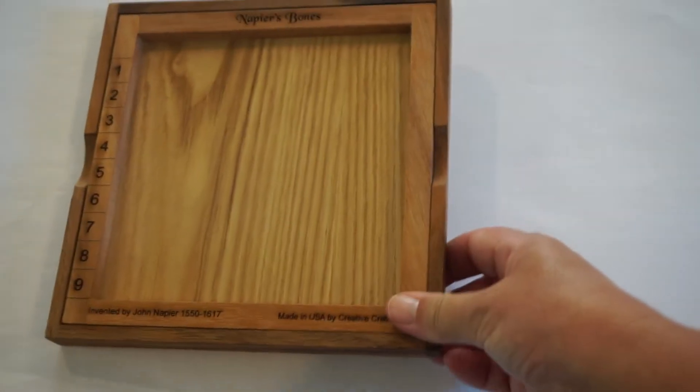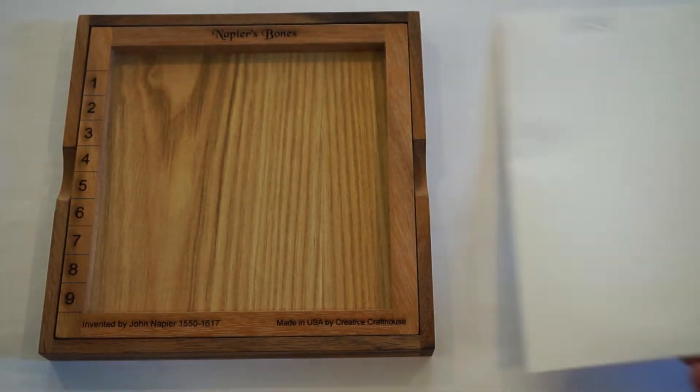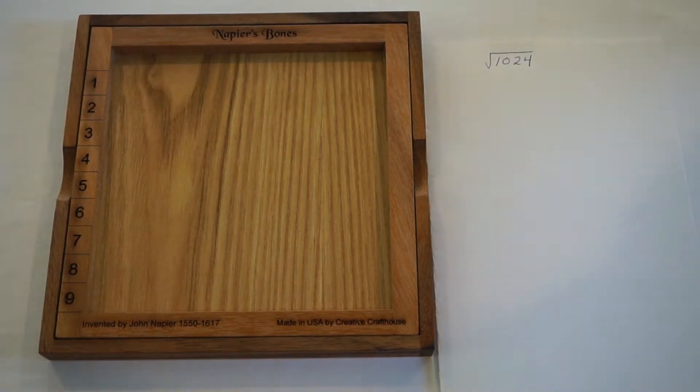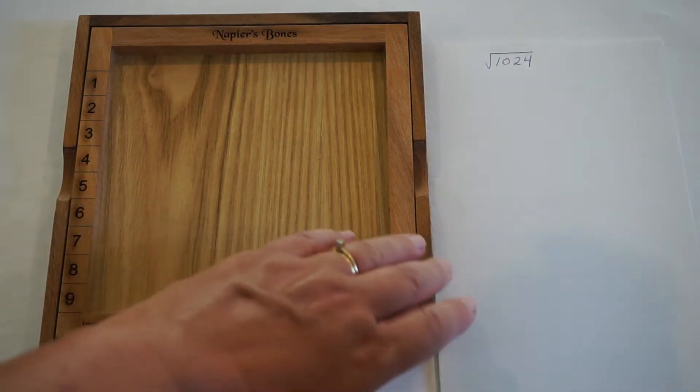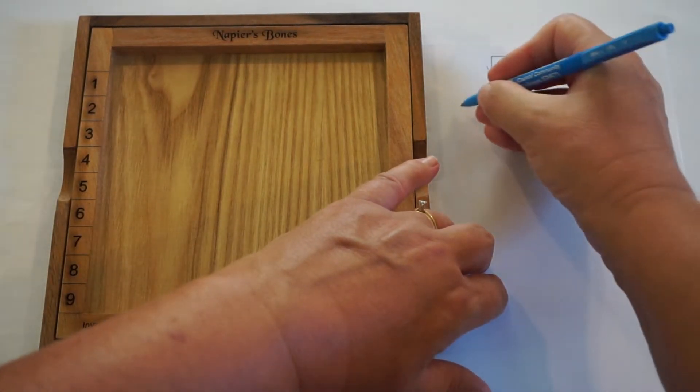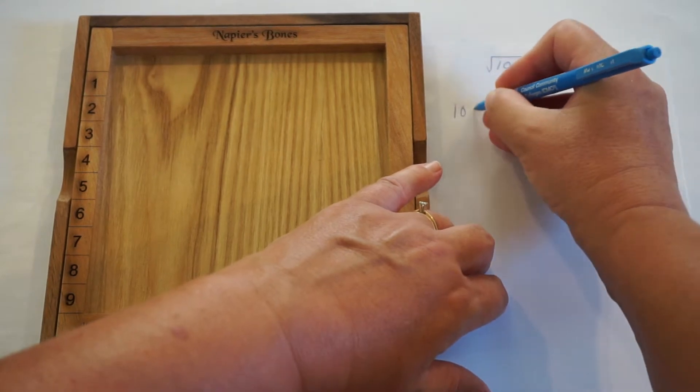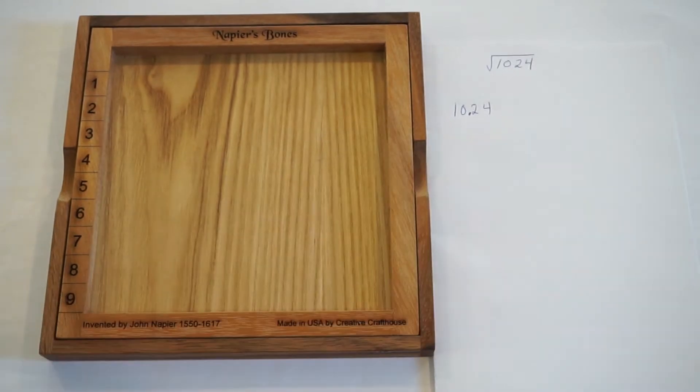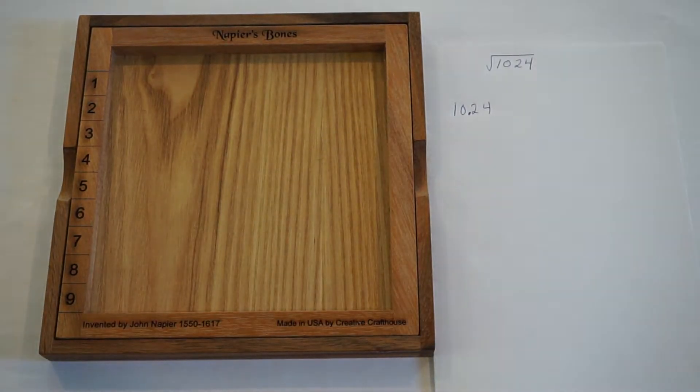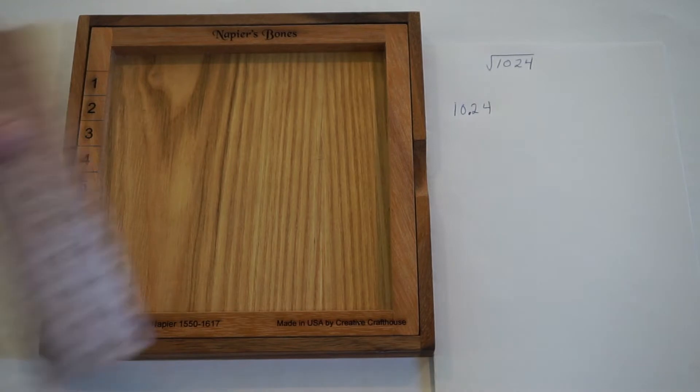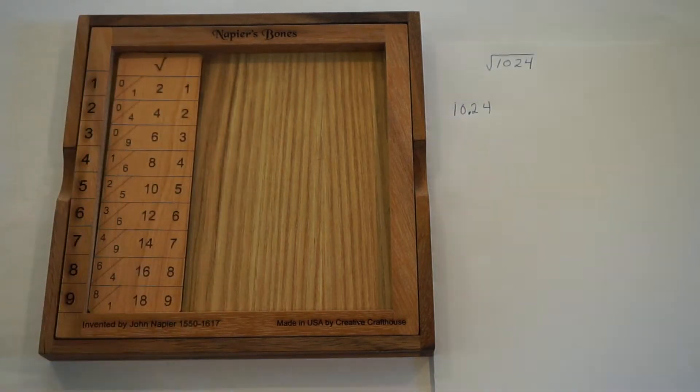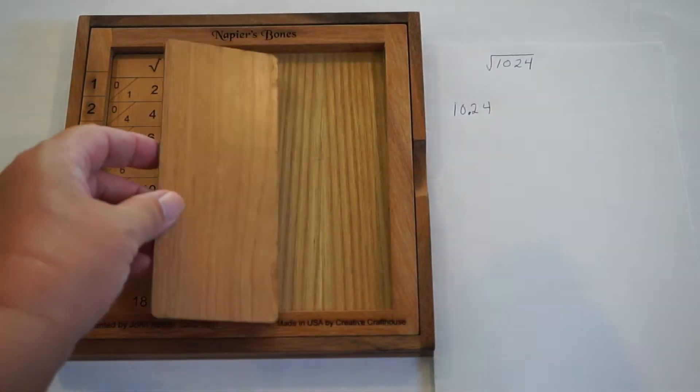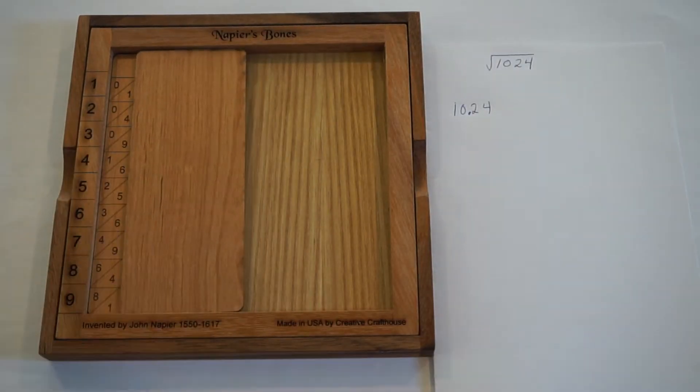So the first problem that we're going to work is to find the square root of 1024. We begin by writing our number and splitting it into doublets. So 1024, we're going to put a point here, and that's just a divider. It's not actually a decimal point. What we do is we start with our square root rod, and we can just be focused on the left-hand column of that rod. So I'm even just going to cover up the other parts.